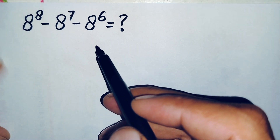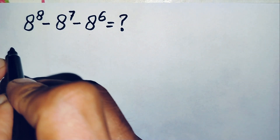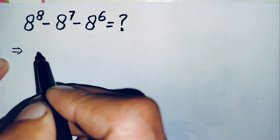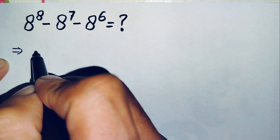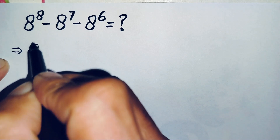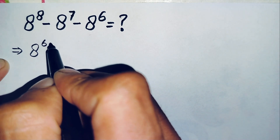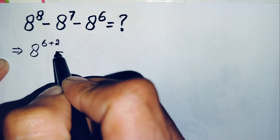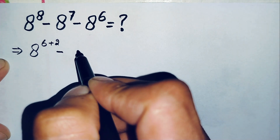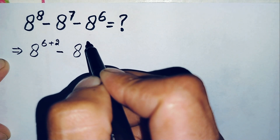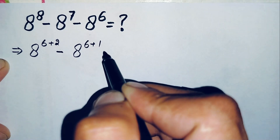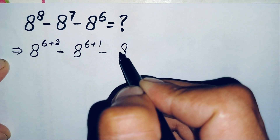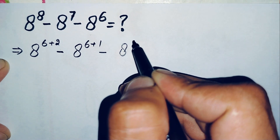Now how can we solve this problem? First of all we will change these two powers 8 and 7. We can write f raised to power 8 as f raised to power 6 plus 2, minus f raised to power 6 plus 1, minus f raised to power 6.